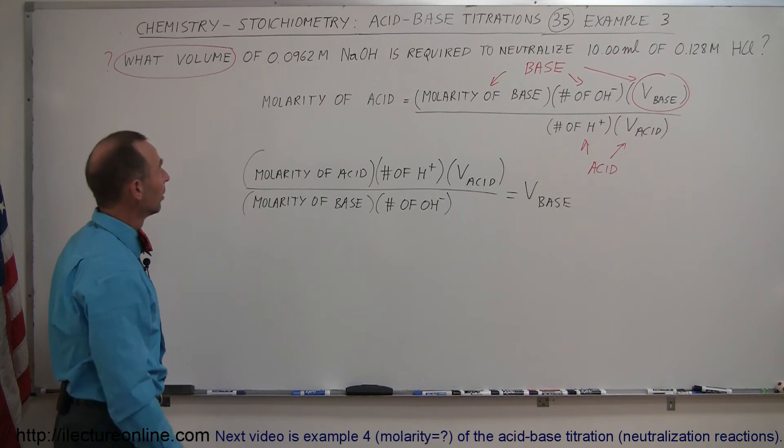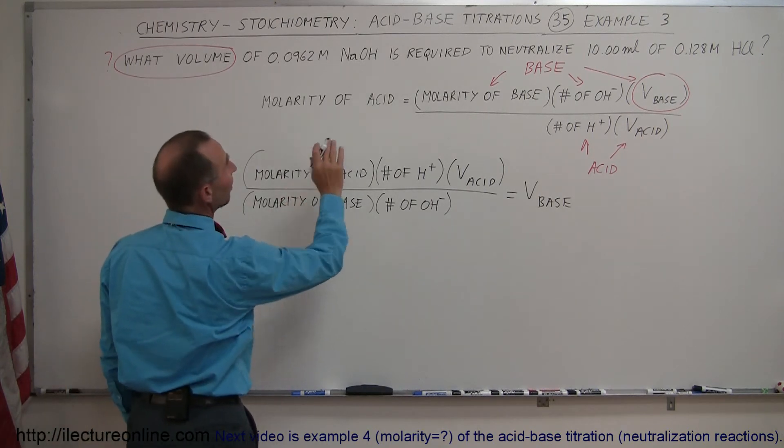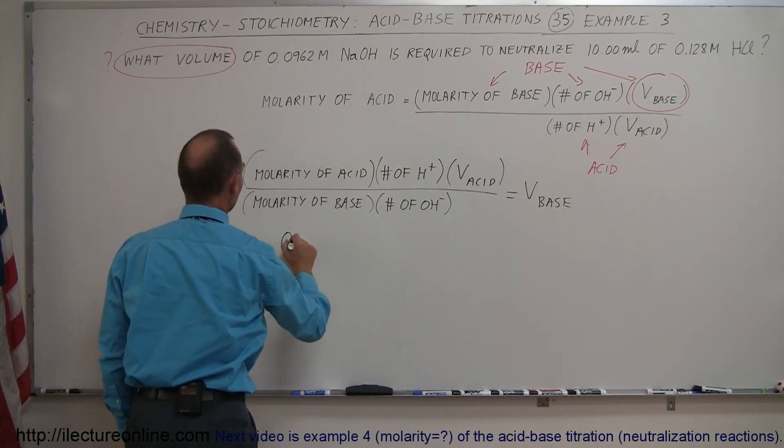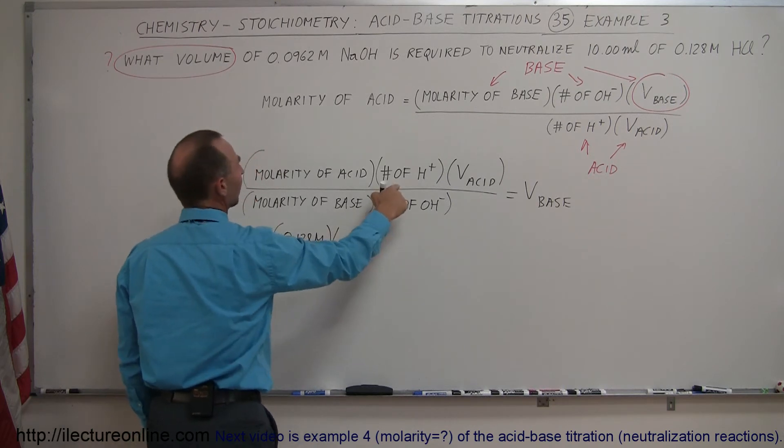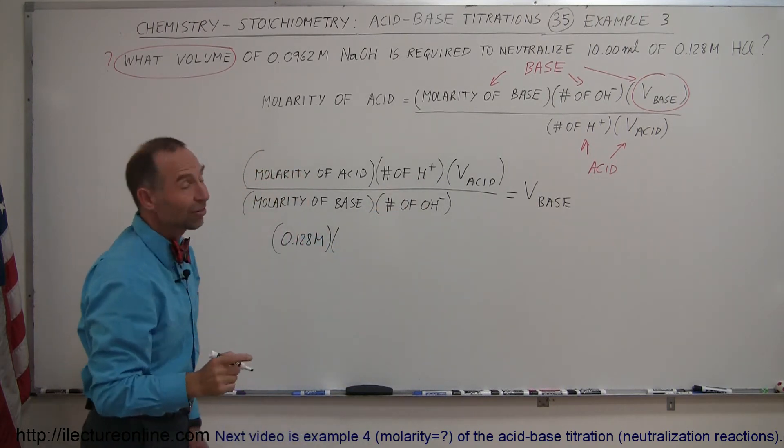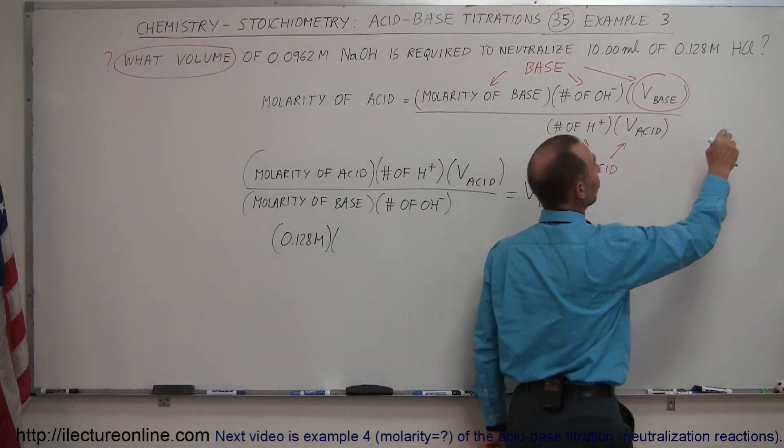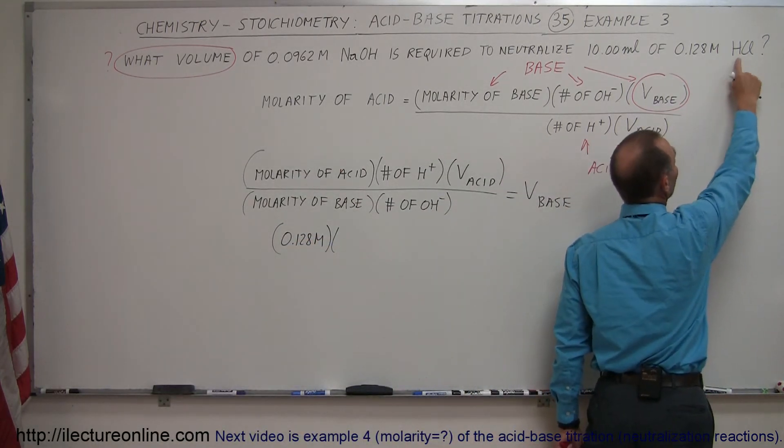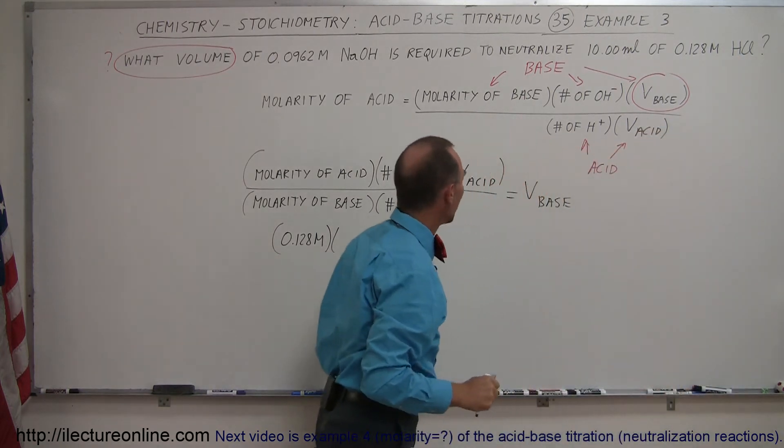Now all we have to do is plug in the numbers. The molarity of the acid was given to us as 0.128. The number of hydrogen ions produced by the acid—in this case we have hydrochloric acid—so when this dissociates in water it produces one hydrogen per HCl molecule.